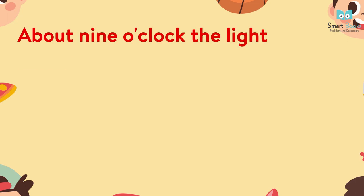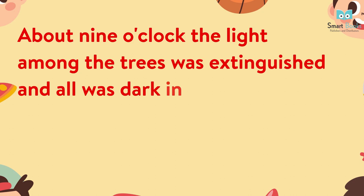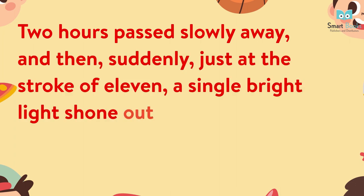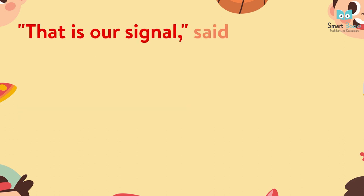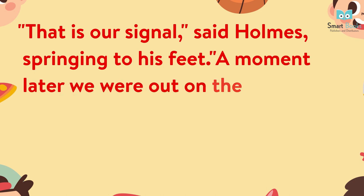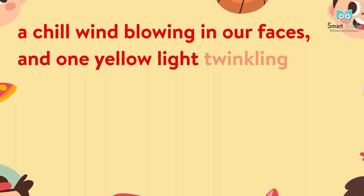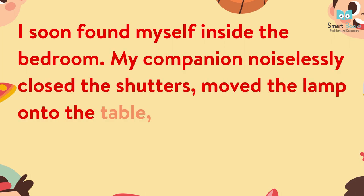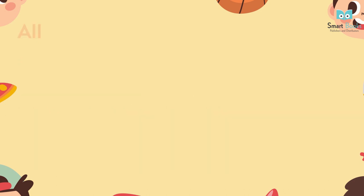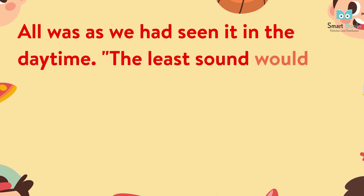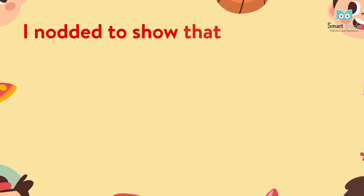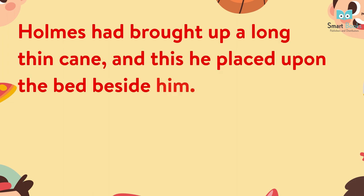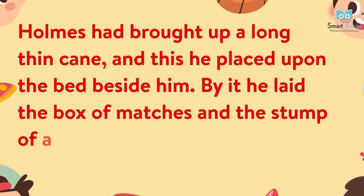About 9 o'clock, the light among the trees was extinguished and all was dark in the direction of the manor house. Two hours passed slowly away. And then suddenly, just at the stroke of 11, a single bright light shone out right in front of us. 'That is our signal,' said Holmes, springing to his feet. A moment later, we were out on the dark road, a chill wind blowing in our faces and one yellow light twinkling in front of us. I soon found myself inside the bedroom. My companion noiselessly closed the shutters, moved the lamp onto the table, and cast his eyes round the room. All was as we had seen it in the daytime. 'The least sound would be fatal to our plans,' he whispered. I nodded to show that I had heard. 'We must sit without light.' Holmes had brought up a long, thin cane, and this he placed upon the bed beside him. By it, he laid the box of matches and a stump of a candle.